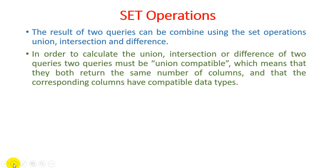In order to calculate the union, intersection, or difference of two queries, the two queries must be union compatible, which means they both return the same number of columns and the corresponding columns have compatible data types. Whenever a user wants to perform set operations, it is a prerequisite that the tables must be union compatible. If the queries execute with the same number of columns and the same data types, the table is union compatible and you can apply union, intersection, or difference as required.